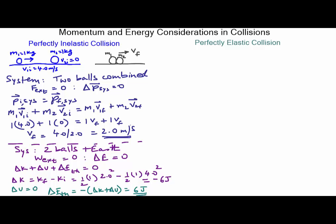Looking at the energy considerations: I started with all kinetic energy. The initial energy was all kinetic and equal to 8 joules. As a result of the collision, it went to a final kinetic energy of 2 joules and thermal energy of 6 joules. That's what happens in perfectly inelastic collisions — kinetic energy is never conserved. The process of sticking involves transformation of the objects, which creates heat, so there's always energy lost to thermal energy.